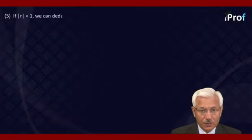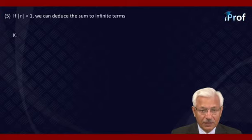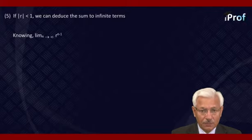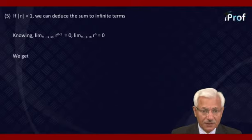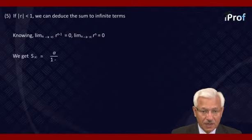When |r| < 1, we can deduce the sum to an infinite number of terms. Knowing that the limit as n tends to infinity of r^(n−1) equals 0, and the limit of r^n also equals 0, we get S_infinity equal to a/(1 − r) plus d·r/(1 − r)².